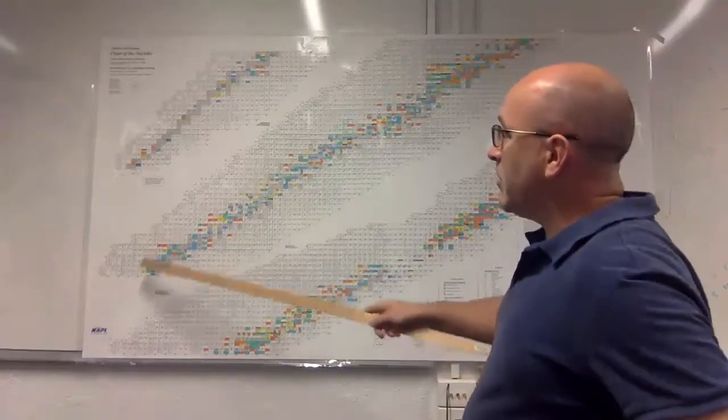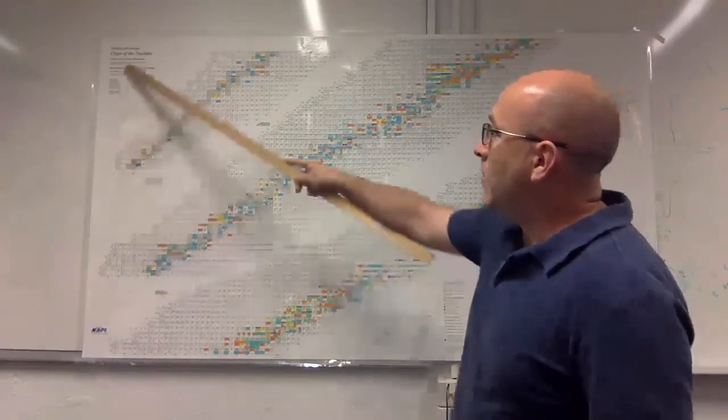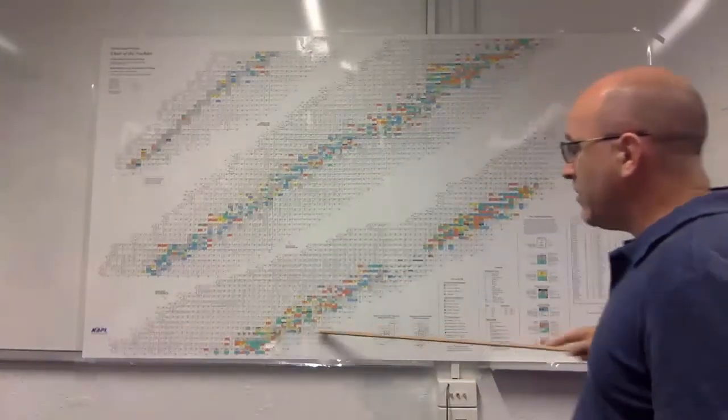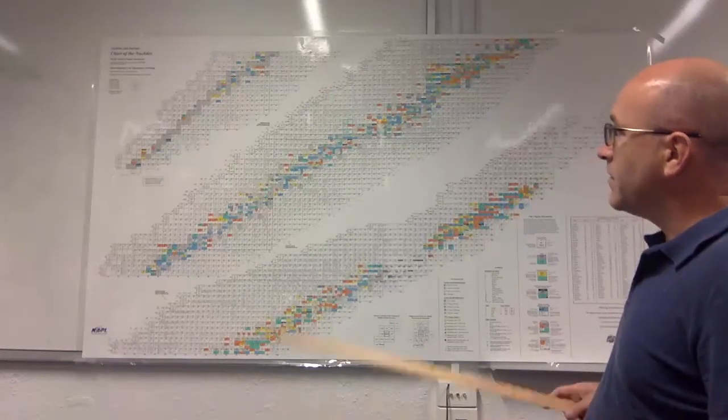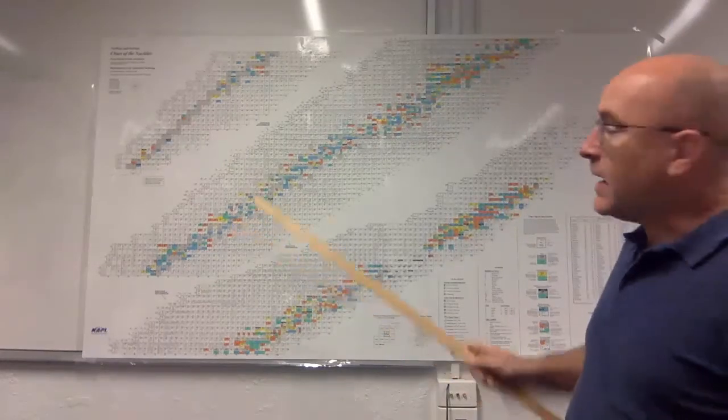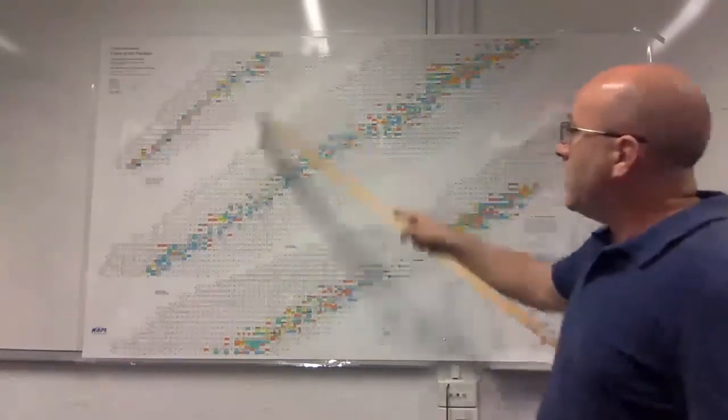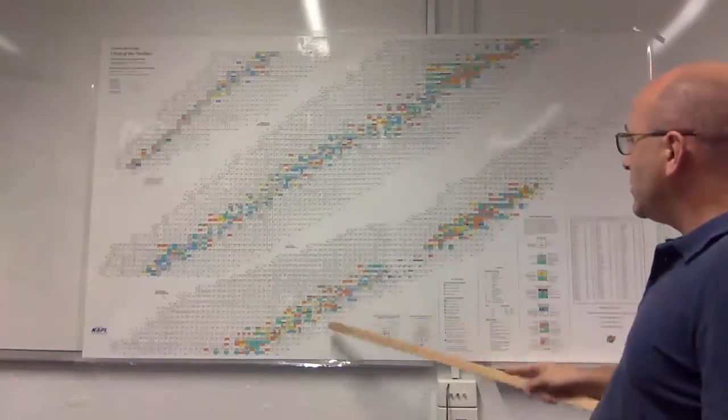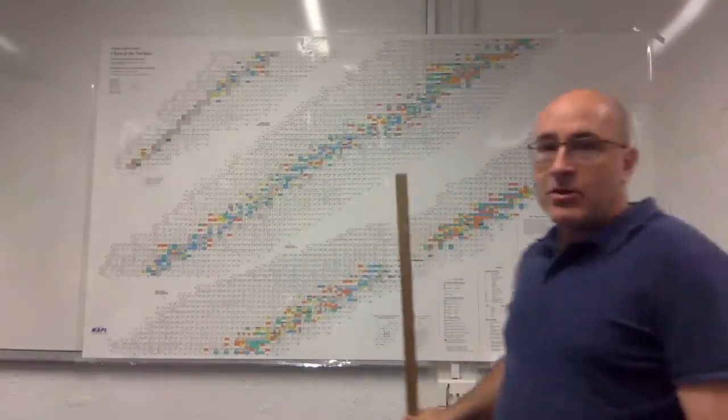Every square on this chart is a nucleus, labeled by its proton number on the y-axis, or its neutron number on the x-axis. What we'll be looking at today is this line of nuclei through the middle of the chart along the diagonal. These are the stable nuclei that exist in the universe and on Earth naturally today.